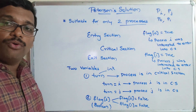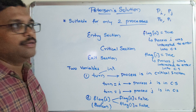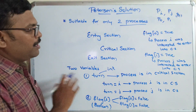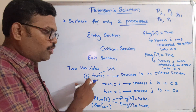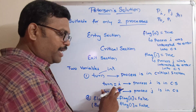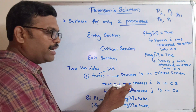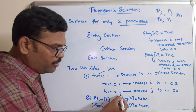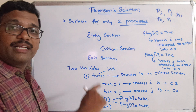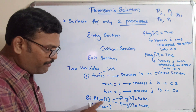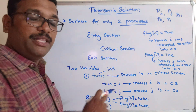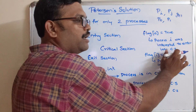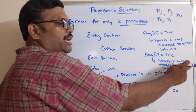These are the basic things we need to know before writing the solution. This is for only two processes — PI and PJ, or P0 and P1. Two variables will be used. One is 'turn': if turn equals I, process I is in the critical section and process J must wait; if turn equals J, process J is in the critical section. The second variable is a boolean flag array initialized to false. If flag[0] is true, process I wants to enter the critical section; if flag[1] is true, process J wants to enter.